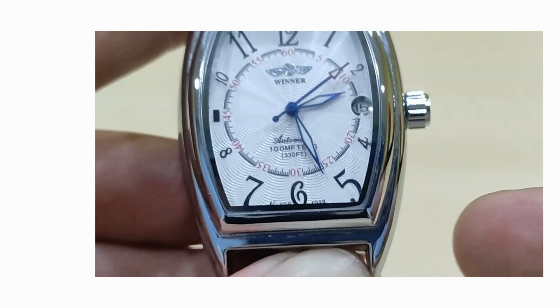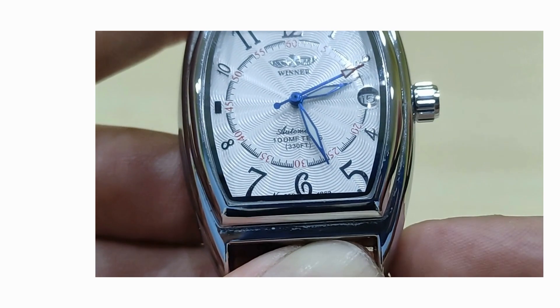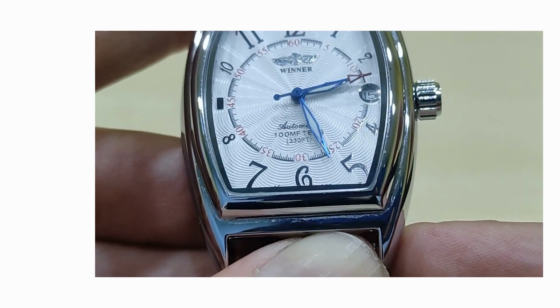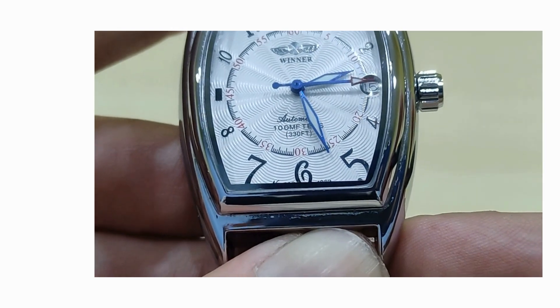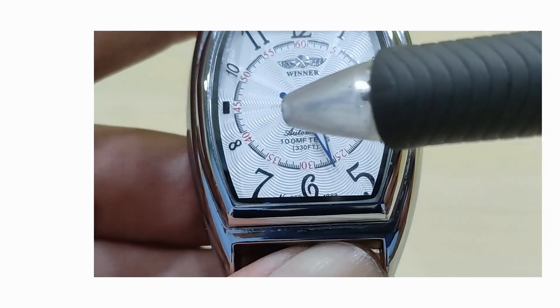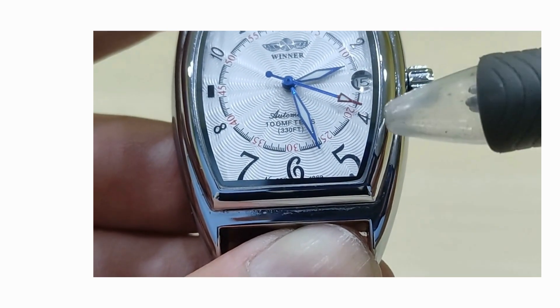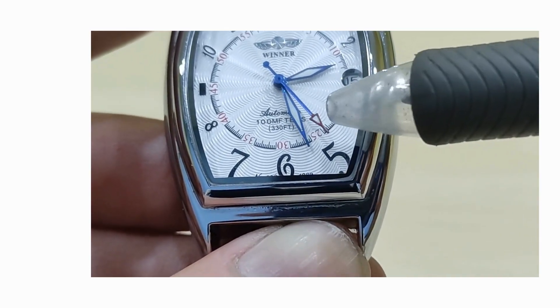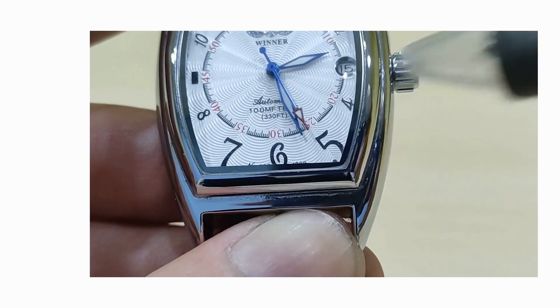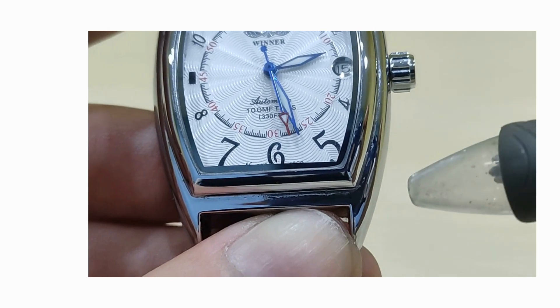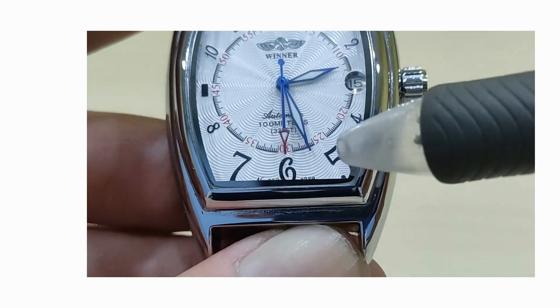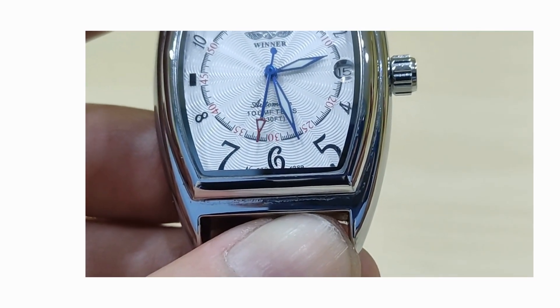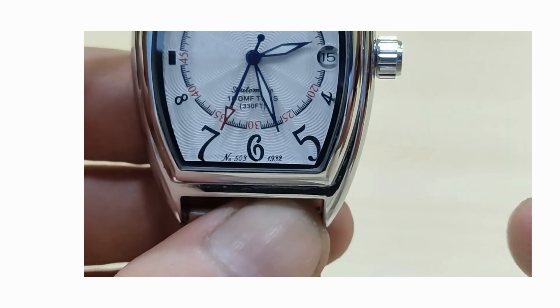The hands themselves, I'm not sure if you can see this, they are blue, not blued, not heat treated, but blue. You have lume within those hands. The second hand is just a stick hand but with a quite nice red arrowhead pointing towards those seconds on the central dial.